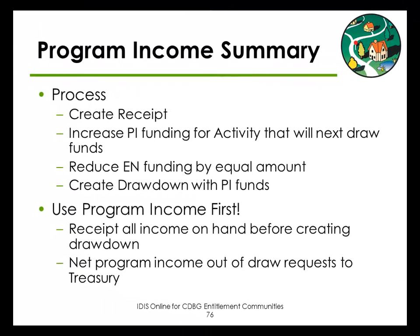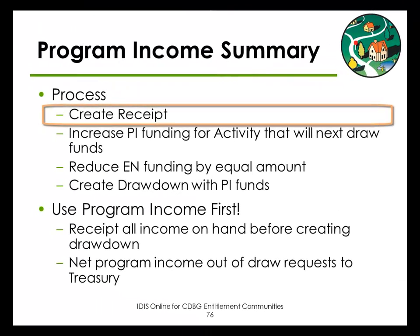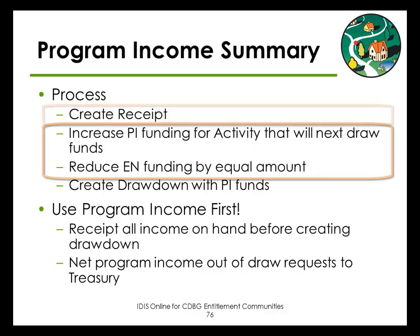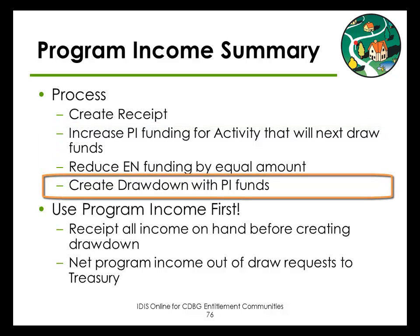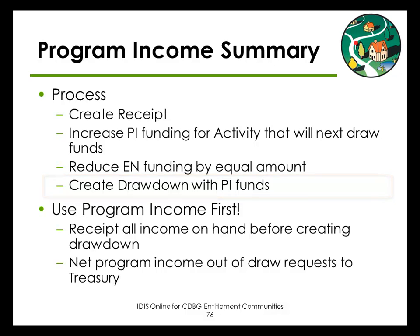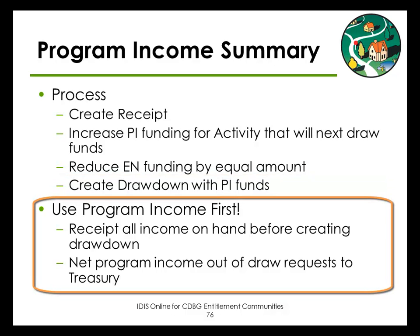That's all there is to program income. To report to HUD the receipt of new income, you will create a program income or revolving loan receipt. To report the expenditure of program income for an eligible activity, you will first adjust the activity's funding and then create a drawdown from the PI fund type. Remember that the timing of the receipts and drawdowns is important. The rule to remember with program income is to use it first before drawing additional entitlement funds from your line of credit.